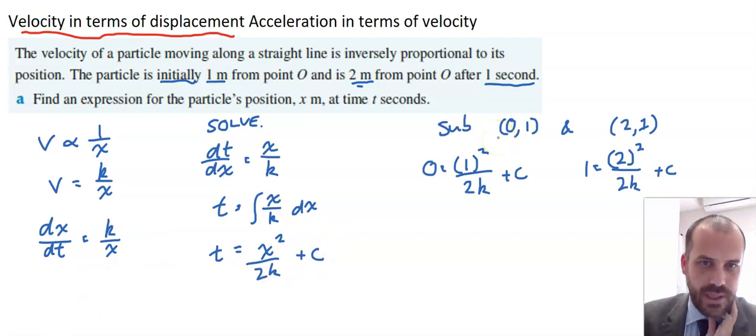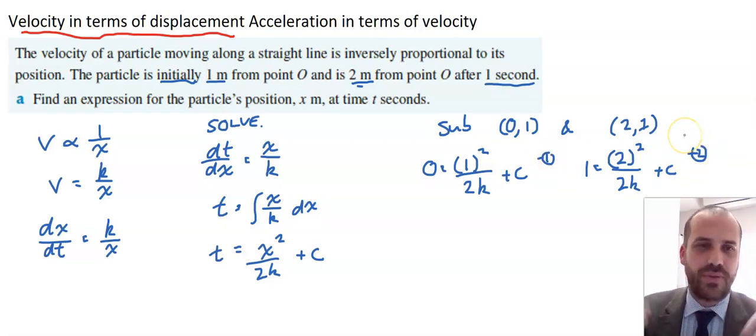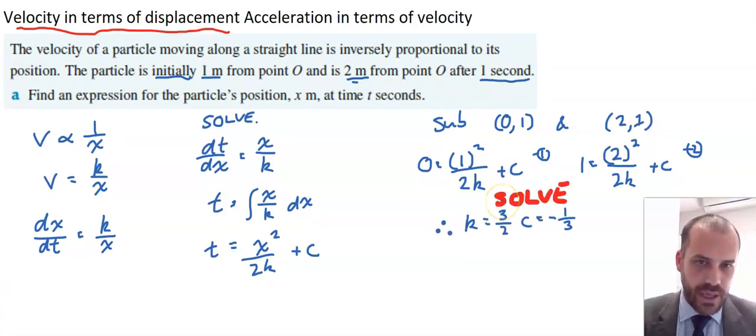The two points I'm subbing in, (0,1) and (2,1). Remember that 0 refers to the time, and 1 refers to the displacement, and here as well. And then we just solve this. This is equation 1. This is equation 2. And then we just solve them simultaneously, however we want to solve them simultaneously.